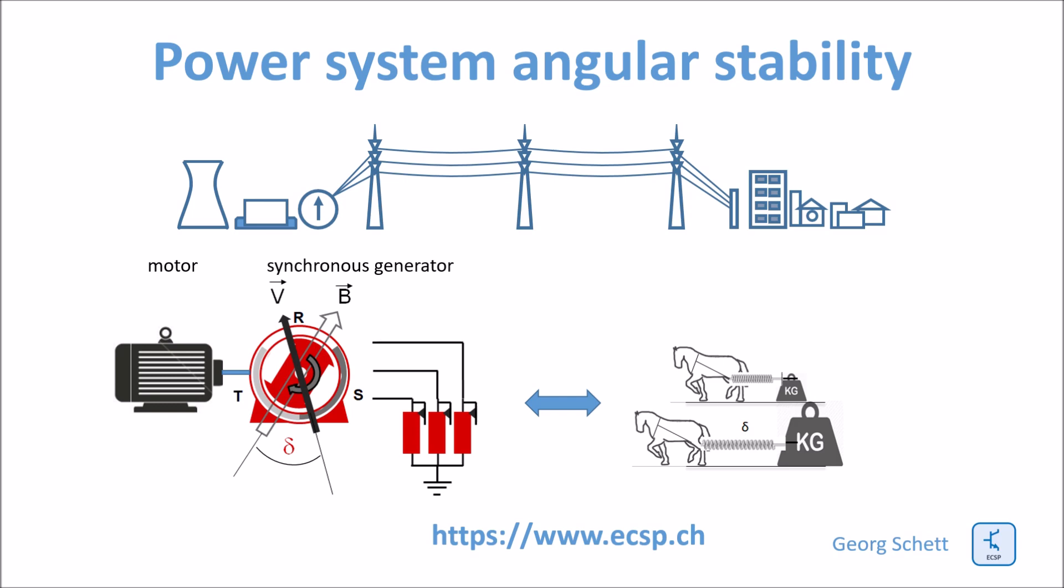As soon as the generator supplies real power to the network, there will be an angle between the rotating magnetic field of the stator of the generator and the DC magnetic field of the rotor. This angle is proportional to the torque which is applied by the motor connected to the shaft of the generator.